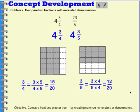Now, I can see that 4 and 3 fourths is equal to 15 20ths. 23 fifths is equal to 12 20ths. So I can compare these fractions now because they have like units, like denominators. Now, I can compare my mixed number and my fraction. And I can see that 3 and 3 fourths is greater than 23 fifths.